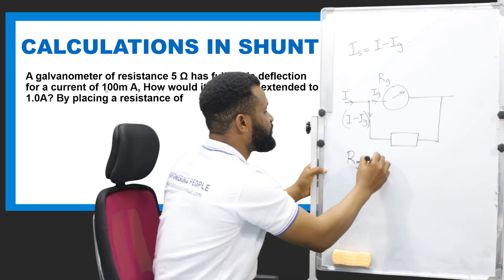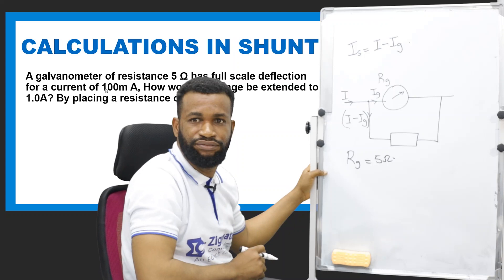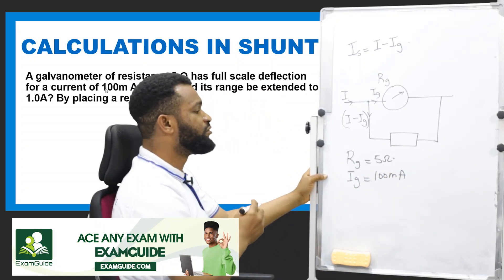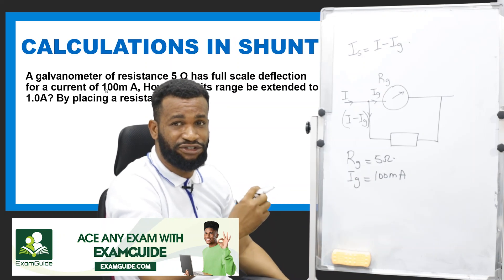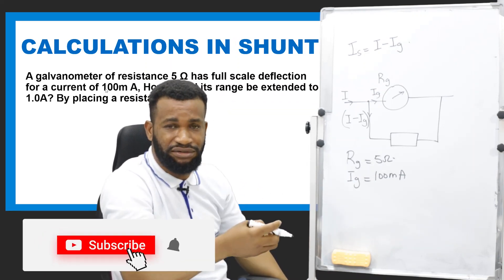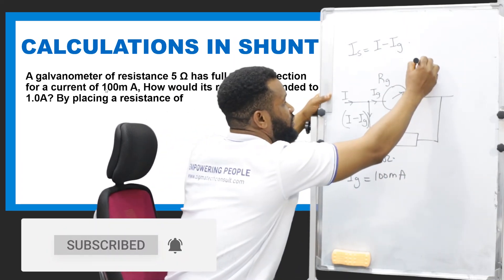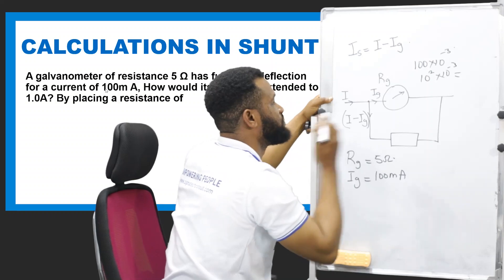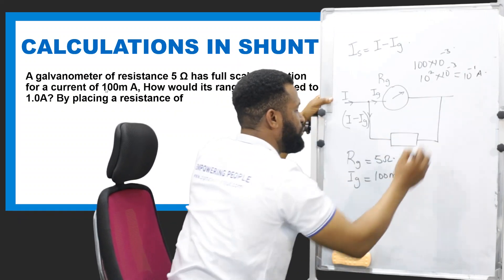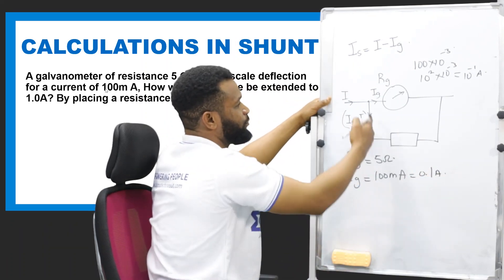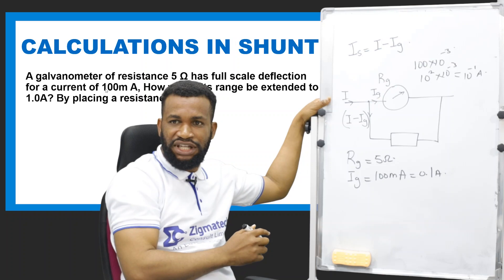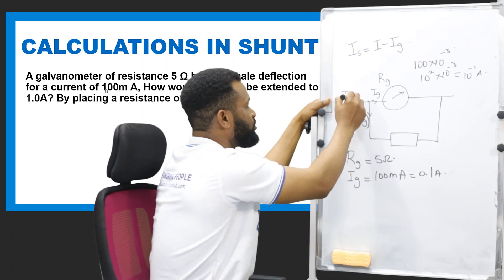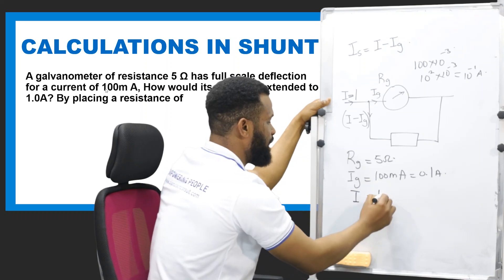The resistance of the galvanometer is 5 ohms. The current through the galvanometer is 100 milliamperes. When you hear the word milli, it is a scientific prefix — 10 raised to the power of minus 3. So 100 milliamperes is 100 × 10⁻³ = 10⁻¹ ampere, which is 0.1 ampere. That is the current flowing through the galvanometer. How would its range be extended to 1 ampere? So the total current flowing into the system is 1 ampere.